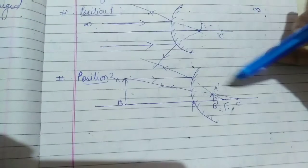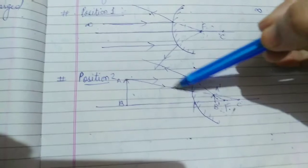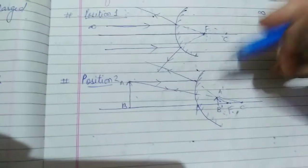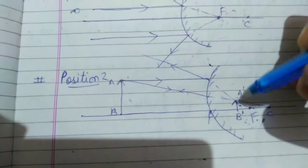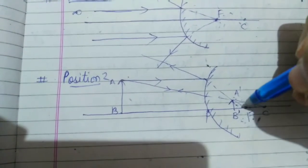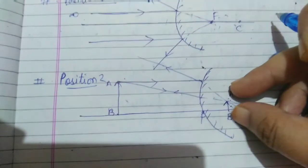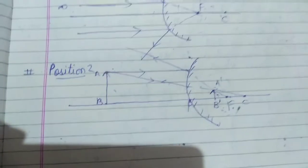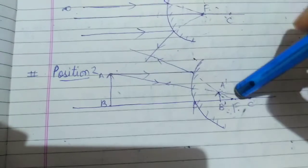The second ray is taken through the center of curvature. We know that if an incident ray passes through the center of curvature, the reflected ray retraces the same path. So here the incident ray and reflected ray follow the same path. When we trace these rays, they intersect at a point — that intersection point is the head of the image, A dash. So A dash B dash is the image formed.